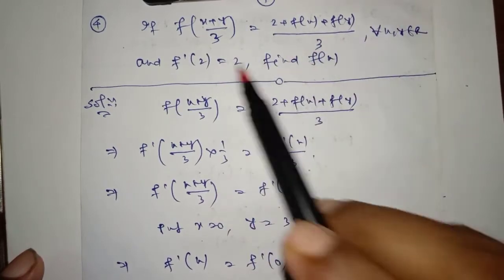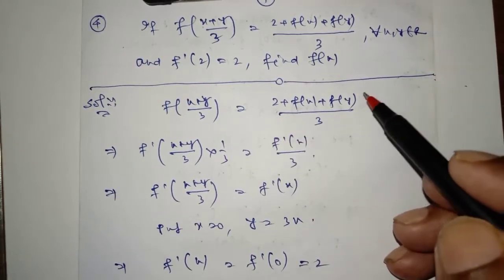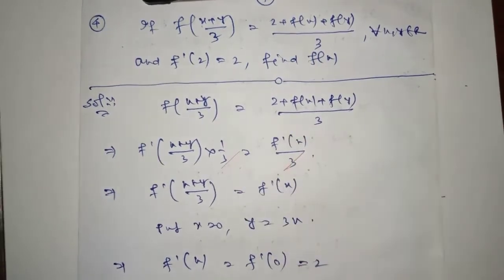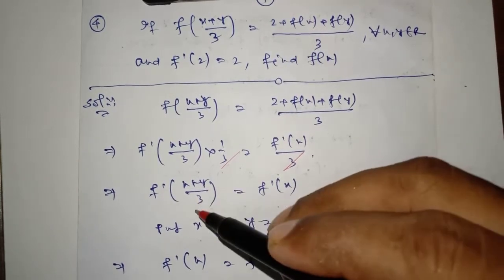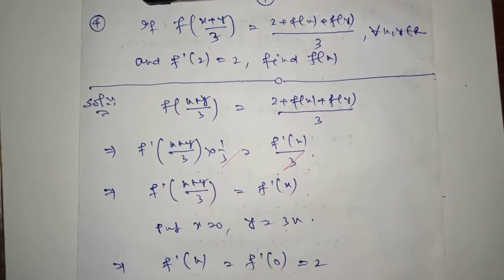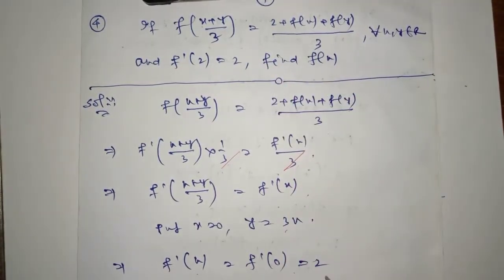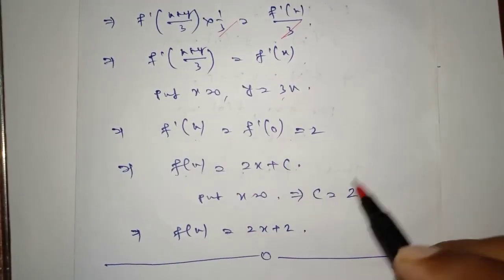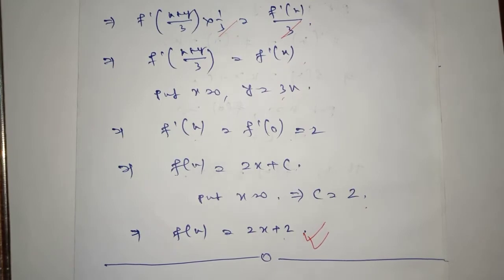Question 4: f((x+y+z)/3) = ... for every x, y belongs to R, and f'(2) = 2, find f(x). Is ko differentiate karo: f'((x+y)/3) — 3s cancel. Put x = 0, y = 3x. So f'(x) = f'(0). Now f'(2) = 2, so f'(0) = 2. Therefore f(x) = 2x + c. Put x = 0: c = 2. So f(x) = 2x + 2.